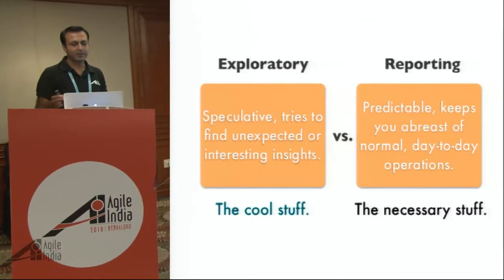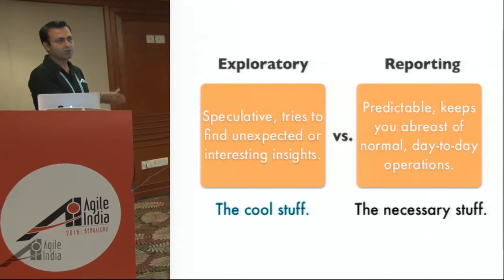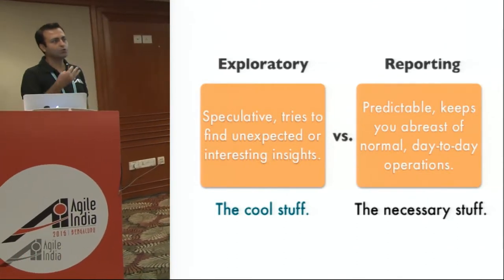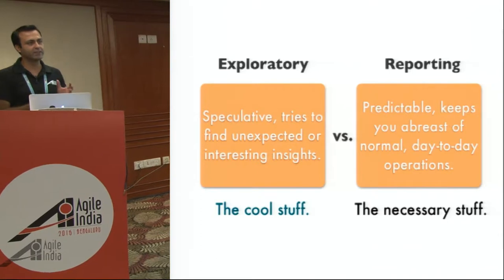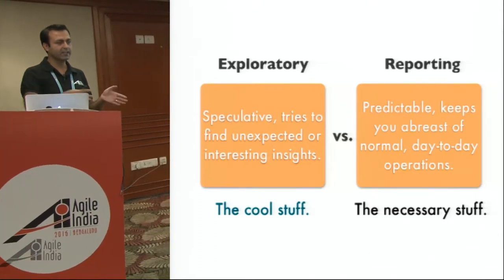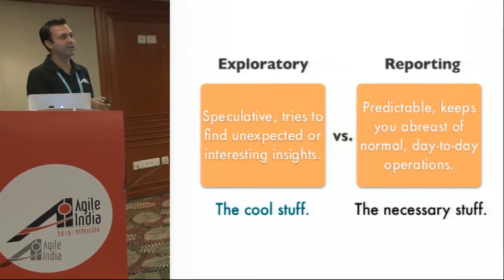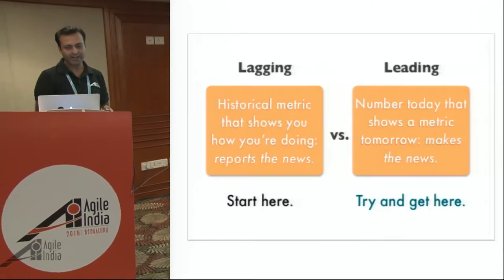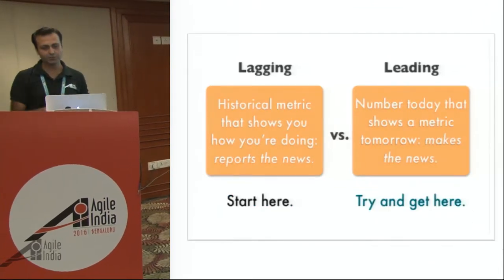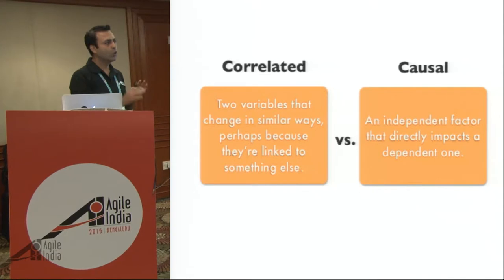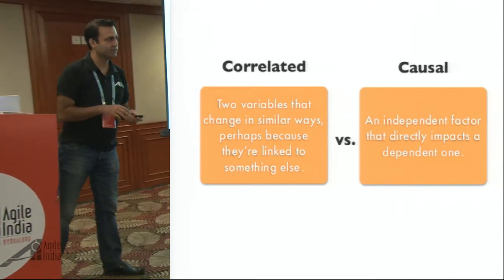Another thing that typically happens is you're putting a bunch of metrics, but at times you also end up with an exploratory metric and figure out: we're looking at this pattern, let's dig into the data and figure out if something is really happening there. That actually helps you with correlated and causal metrics.